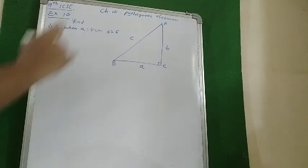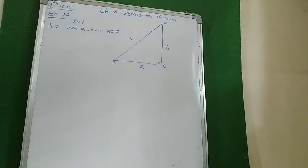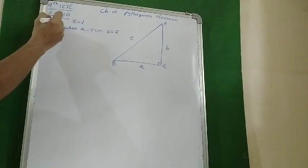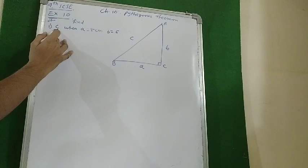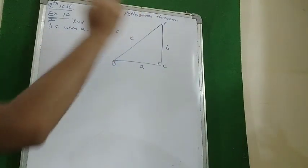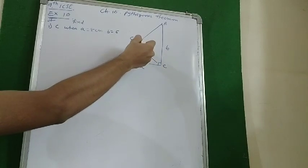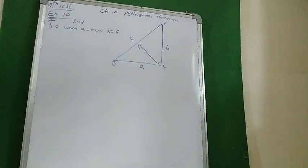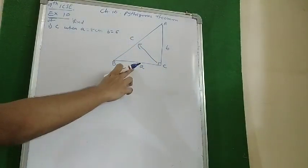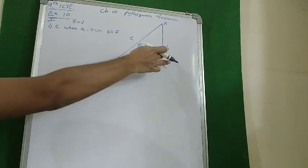Today we will start with the 10th chapter on Pythagoras theorem, 9th ICAC. The very first part of the first question is to find C when A and B are given. This is a right angle triangle. Remember that the side opposite to 90 degrees is the hypotenuse, and we call the other sides base or height.